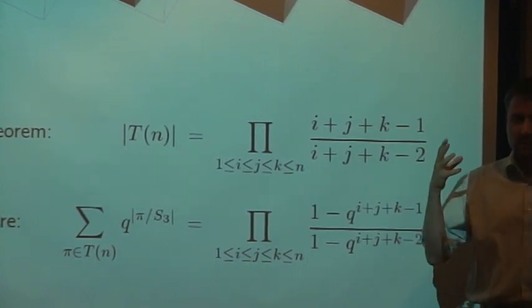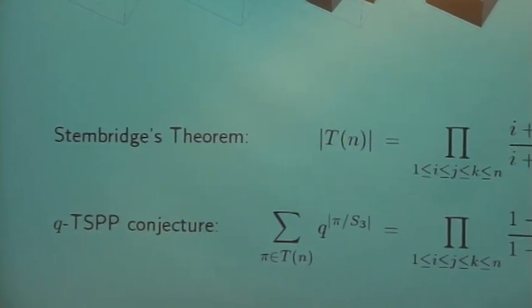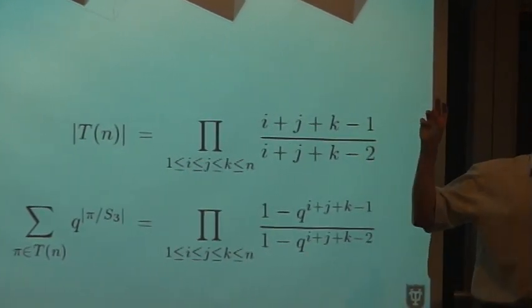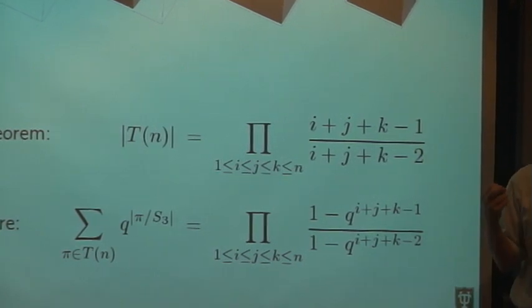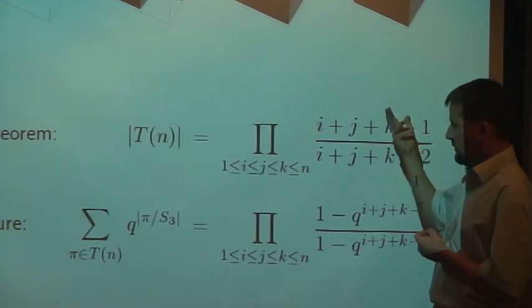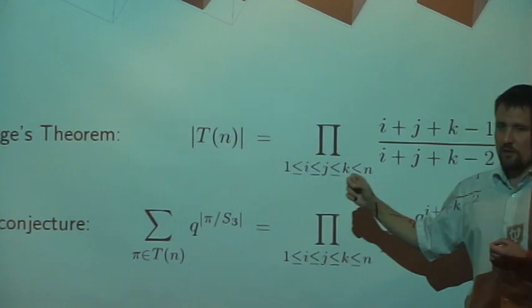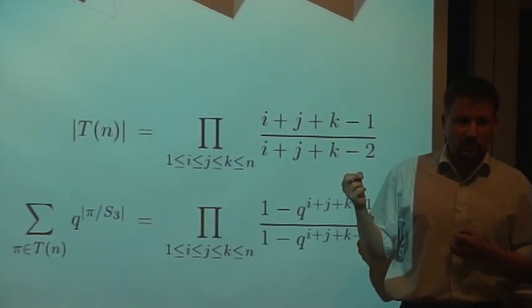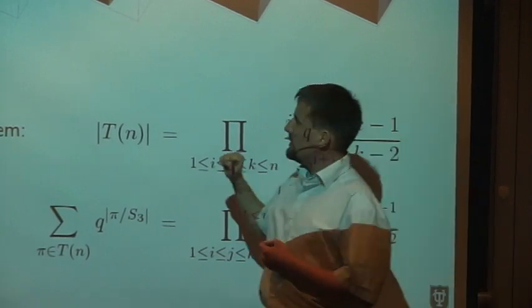Now we are going to refine this statement. We are not only interested in the number of such plane partitions, but also how many orbits do they have. For this we introduce the notation, an extra symbol q, that encodes the number of orbits.